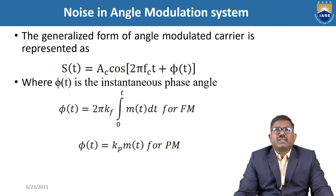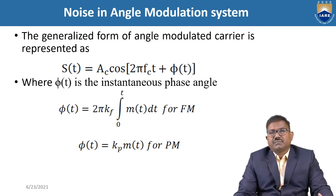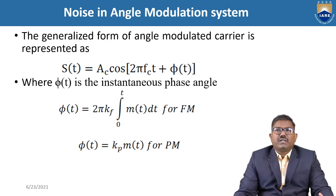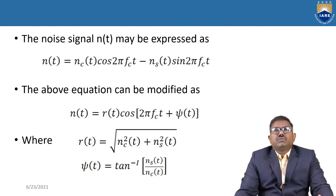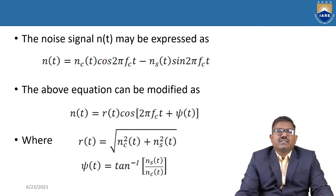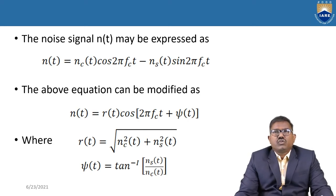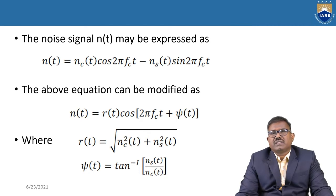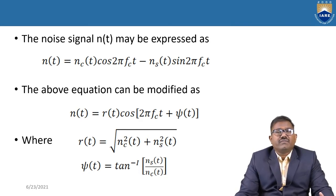I am going to calculate the noise in the FM system, so I am using φ(t) = 2π·Kf·∫₀ᵗ m(t)dt. The noise N(t) may be expressed as N(t) = Nc(t)·cos(2π·fc·t) − Ns(t)·sin(2π·fc·t), which is narrowband noise having in-phase and quadrature components.